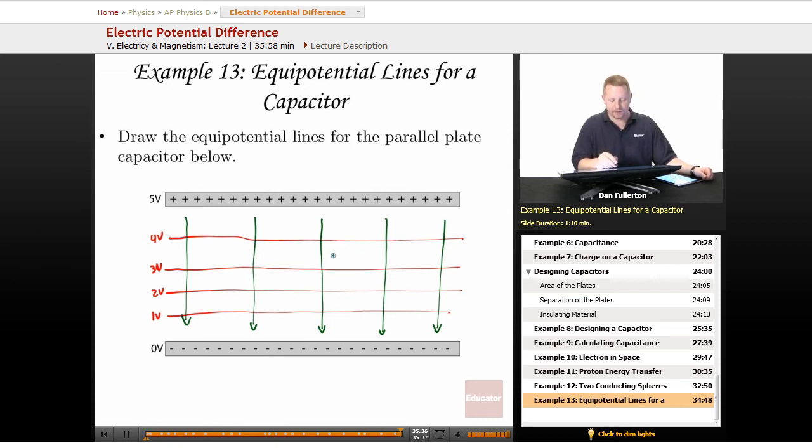We've got a constant electric field between these, but we don't have a constant potential. The potential is going to have a linear gradient from 5 volts down to 0 volts.